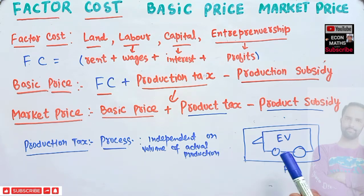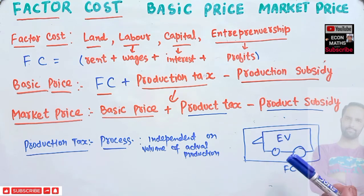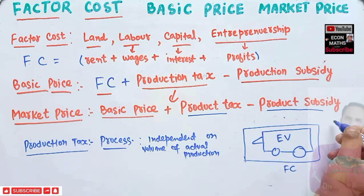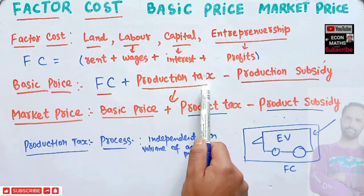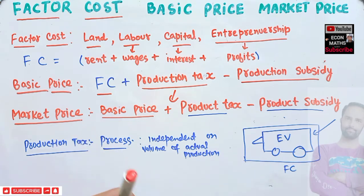Production subsidy works similarly. For instance, if the government thinks manufacturing electric vehicles is beneficial because it reduces air pollution, it may give the firm a subsidy. So basic price equals factor cost plus production tax minus production subsidy — what the producer receives.